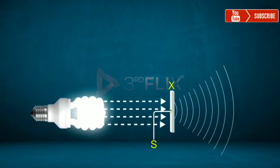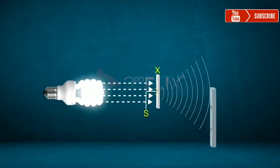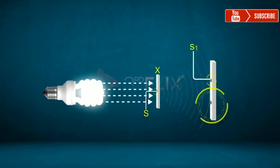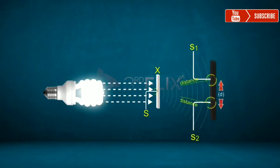The light waves passing through S are then passed through another opaque material with two pinholes, S1 and S2, which are at a distance D apart and equidistant from the pinhole S.